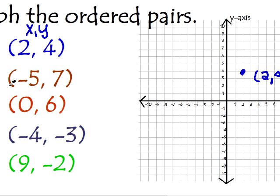Now, my next ordered pair is negative 5, 7. Remember, it's x, y. So I'm going to go to negative 5 on my x, and 7 on my y. 1, 2, 3, 4, 5, 6, 7. And that's my next ordered pair, negative 5, 7.